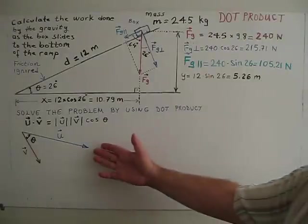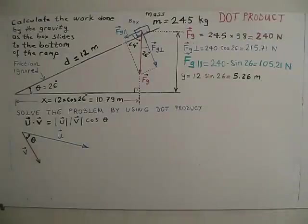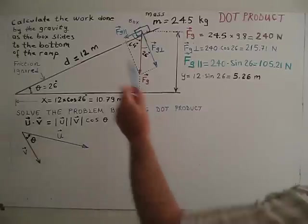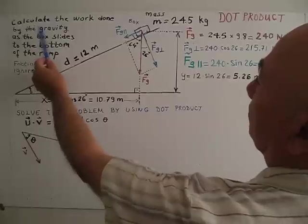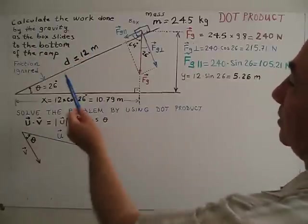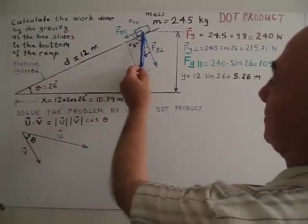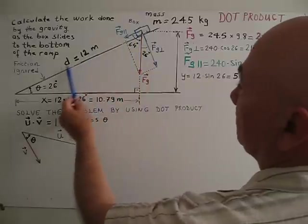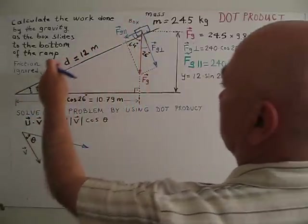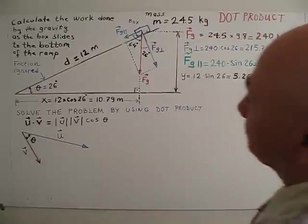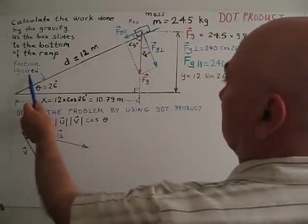Based on this information, I would like to show you this problem. Problem says, calculate the work done by the gravity as the box, this box, slides to the bottom of the ramp. So box slides and comes here.